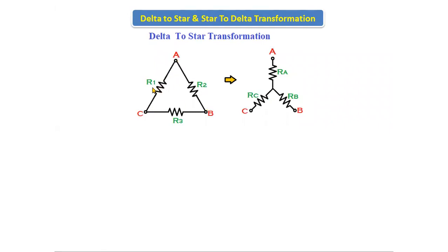The delta connection has three terminals A, B, C, and three resistors R1, R2, R3 connected in the form of delta. The star connection also has three terminals A, B, C, and three resistors Ra, Rb, Rc connected in the form of star.